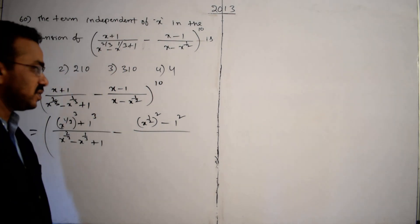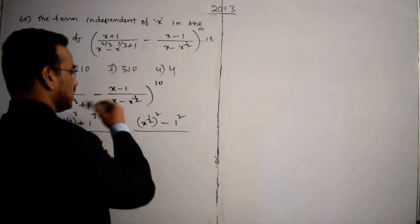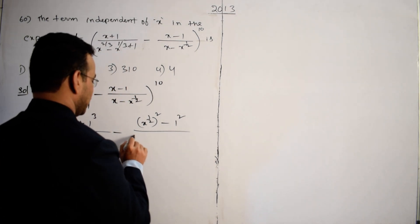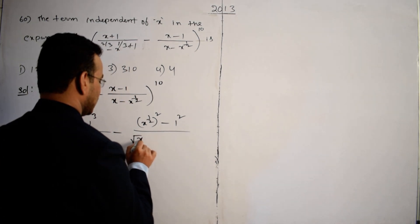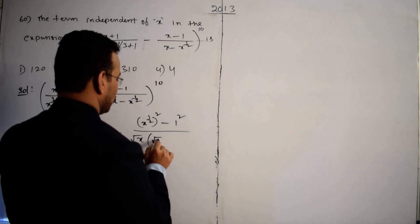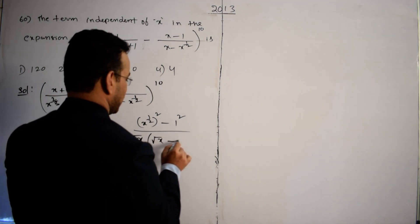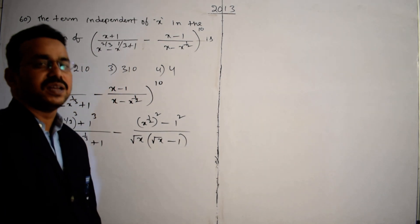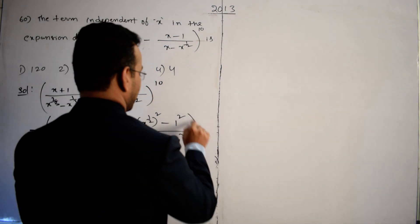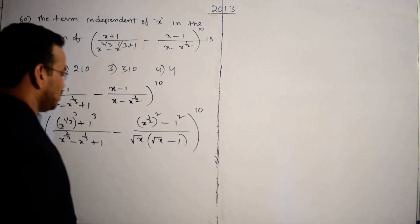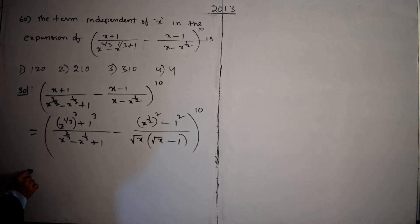For the second term, x - 1 can be written as (x^(1/2))² - 1². I can take x^(1/2) as common outside, giving root x times (root x - 1) in the numerator, and the denominator is x - x^(1/2), which is x^(1/2)(x^(1/2) - 1), whole power 10.